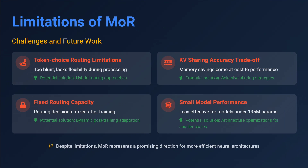Limitations of Mixture of Recursions: token choice routing is too blunt and lacks flexibility during processing. KV sharing accuracy is a trade-off — memory saving comes at a cost. Fixed routing capacity: routing decisions are frozen after training. And small model performance: Mixture of Recursions may not work well with small models — it appears to be more suitable for larger models.